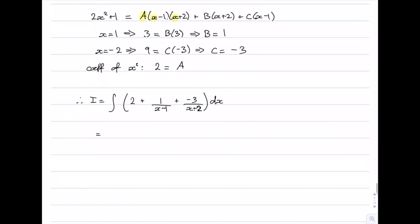Let's slide this up a little bit. Integrating this now is pretty easy. This would be 2x + ln|x - 1| - 3ln|x + 2| + constant. And that is our final answer.